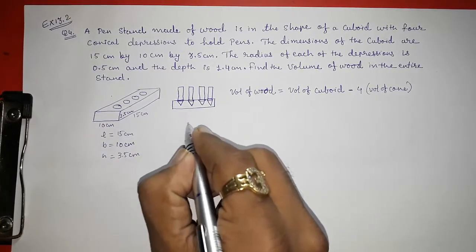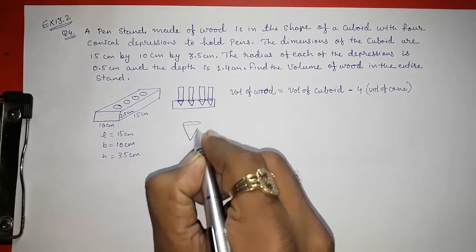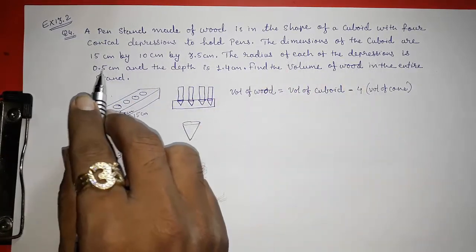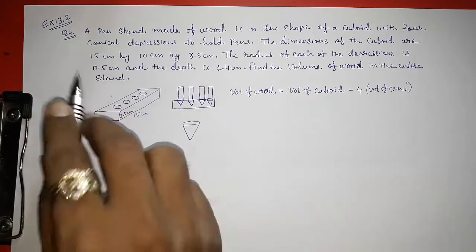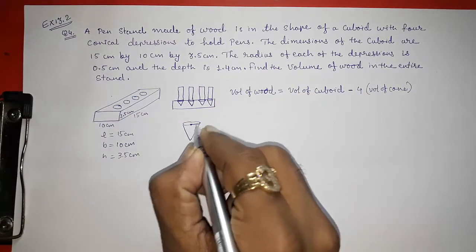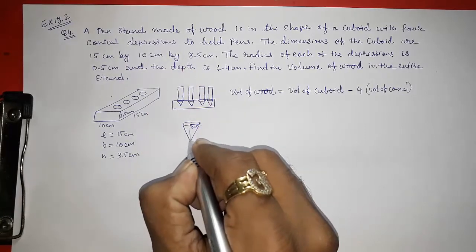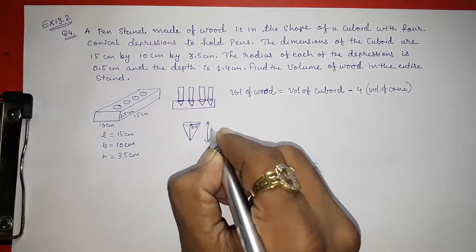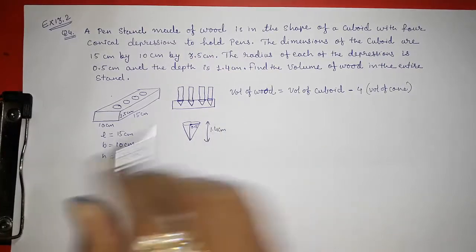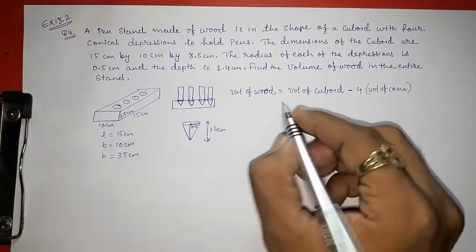Now, here for this cone, single cone, I am drawing this cone. They had given us the depression is 0.5, the radius of the depression is 0.5. So this radius is 0.5 and the depth means this height. Height is 1.4 cm. Now we have to keep it in this.